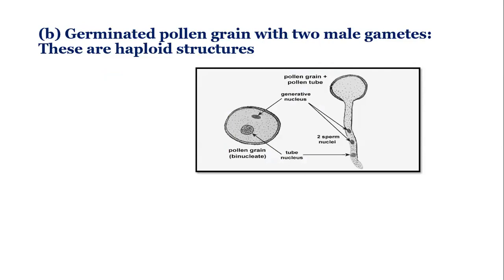Pollen grain germinates when it lands on the receptive stigma. The intine grows out from the germ pore of the pollen and forms the pollen tube. The pollen cell divides into two: the smaller generative cell and a larger tube cell. The tube cell degenerates later and the generative cell forms two male gametes. So these all belong to the same haploid generation, as the diagram makes clear.